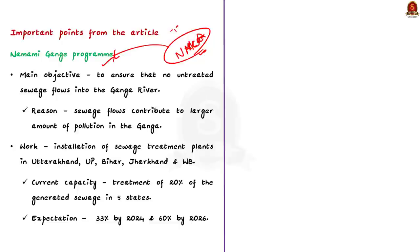It has been seven years since this body was set up, which is why this article is in the news. The article provides insights about the performance of the National Mission for Clean Ganga. In our discussion we will first understand the important points from the article, then see the causes of pollution in river Ganga and the various steps taken by the government to rejuvenate the river.